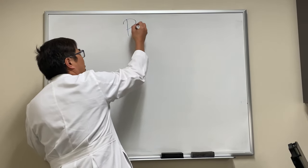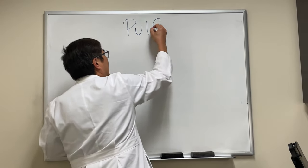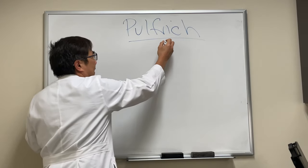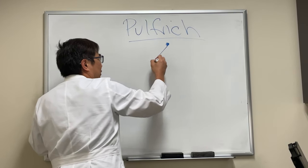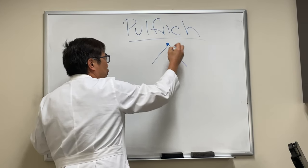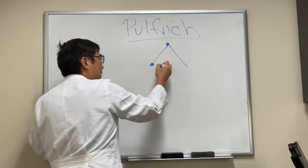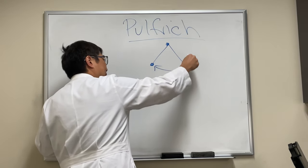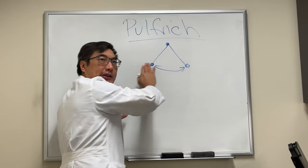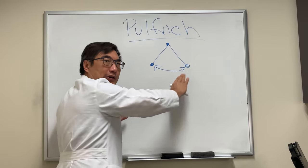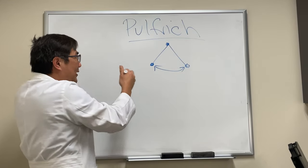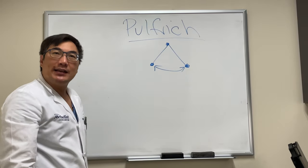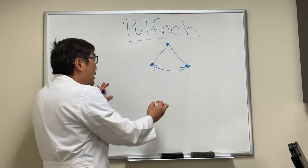The Pulfrick phenomenon is an empiric observation. If you swing a pendulum back and forth like this, you'll just see it in one plane — it'll be uniplanar, going back and forth, because both eyes are seeing the exact same thing at the exact same time.